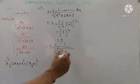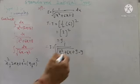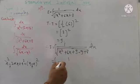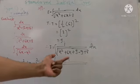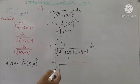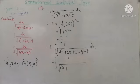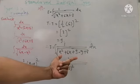Rewriting the integration: I = 1 upon root of (x² + 6x + 9 - 9 + 8). Using the expansion x² + 2ax + a² = (x + a)², we compare: square root of first term is x, sign is plus (since the x term is positive), and square root of 9 is 3, giving (x + 3)² as the perfect square of these three terms.